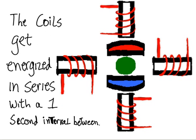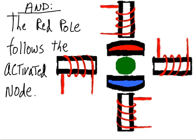The coils get energized in series, with a one second interval between. And the red pole follows the activated node.